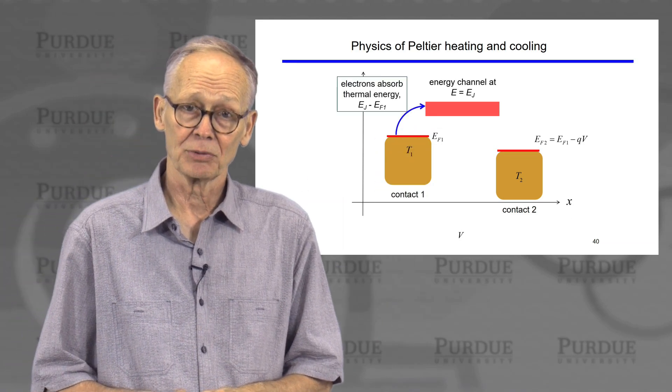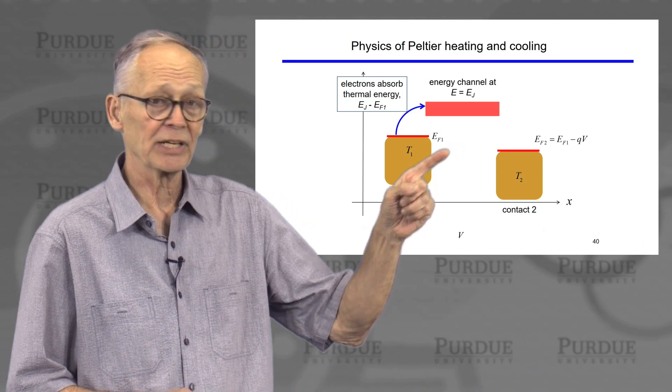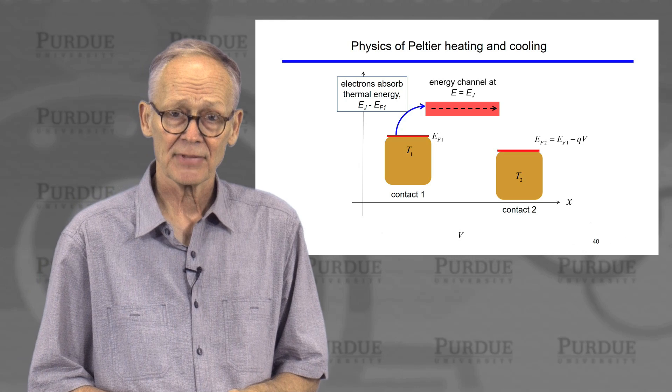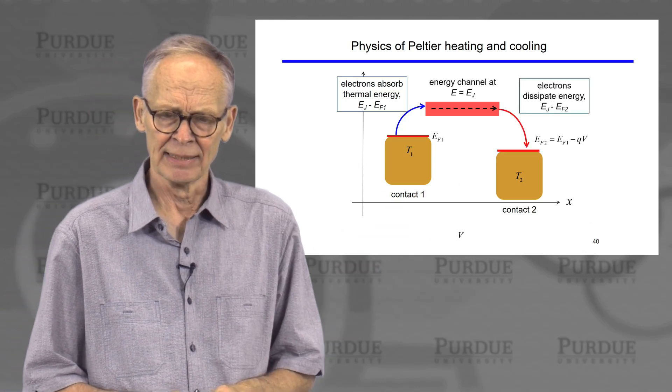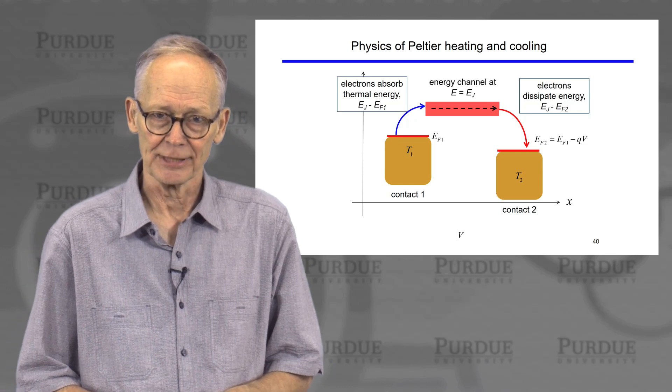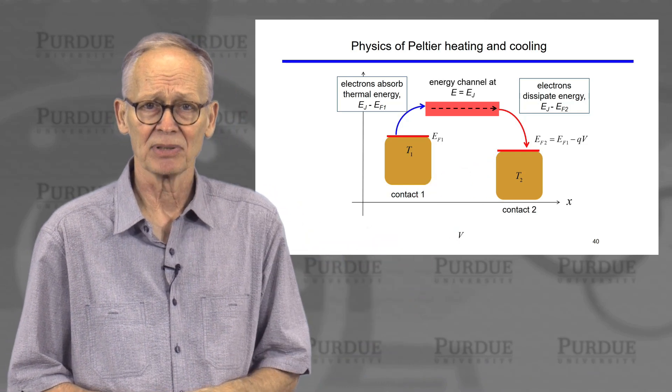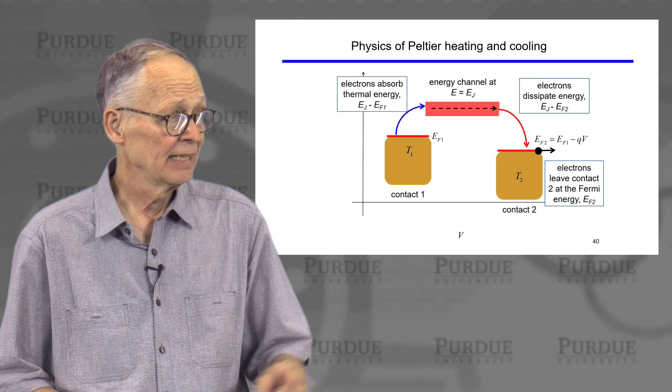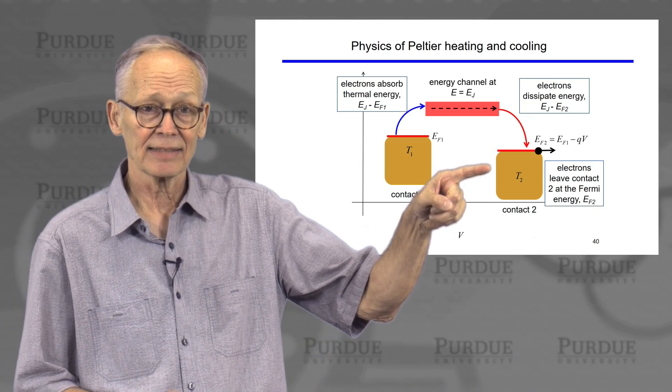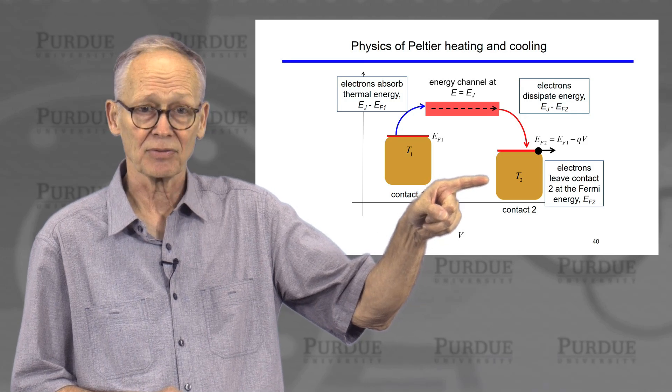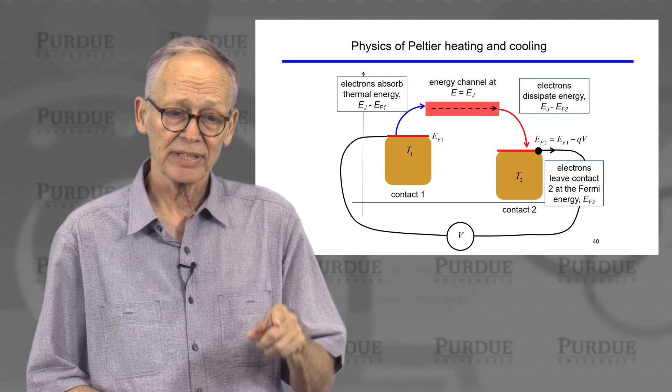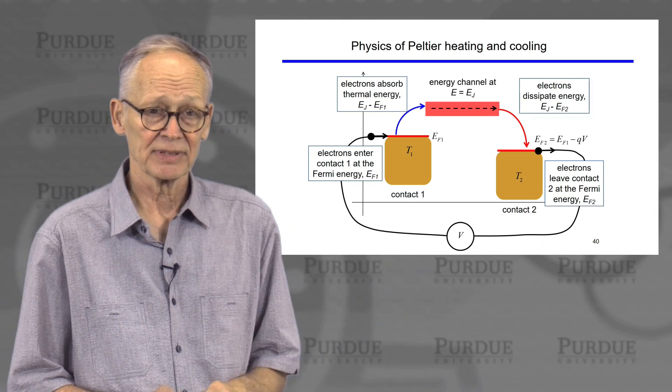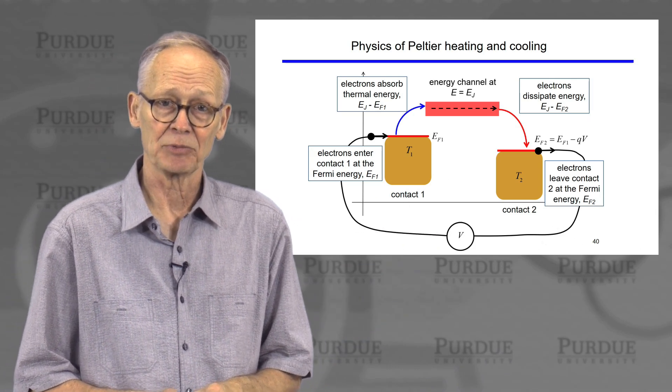Well, they have to absorb thermal energy to do that. They absorb thermal energy, that cools the first contact down. They transport across the semiconductor. When they exit the semiconductor, they give up that energy. Not only do they give up that energy, they give up a little extra energy because the voltage is lower. That extra energy is the power dissipated. The electron now, in the second contact, leaves the contact, flows out at the Fermi energy of the second contact, flows around the external circuit, comes back in, flowing at the Fermi energy, comes into the first contact, and the whole process just keeps repeating itself.